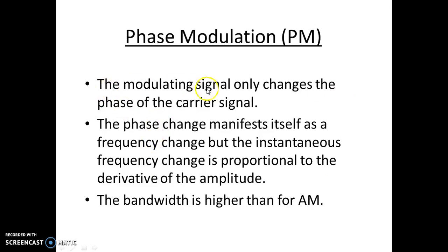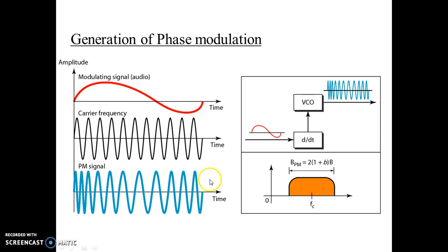First, we'll see what phase modulation is. The modulating signal, which we call the message signal, changes the phase of the carrier signal. The phase change manifests itself as a frequency change, but the instantaneous frequency change is proportional to the derivative of the amplitude. This is the key difference between PM and FM.